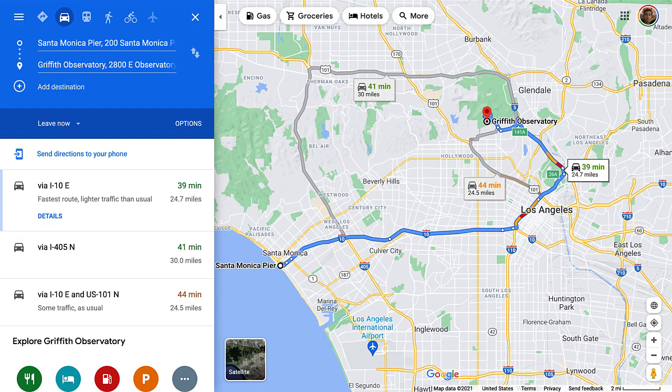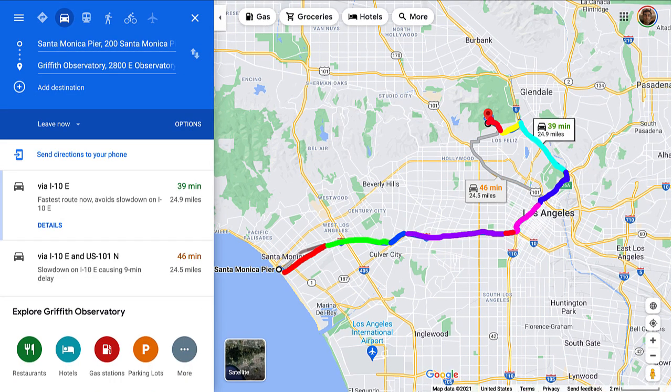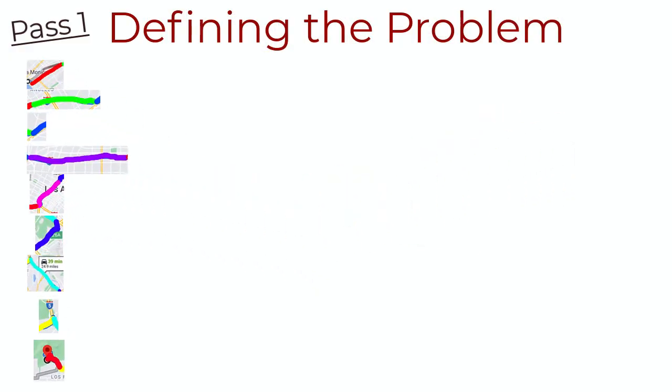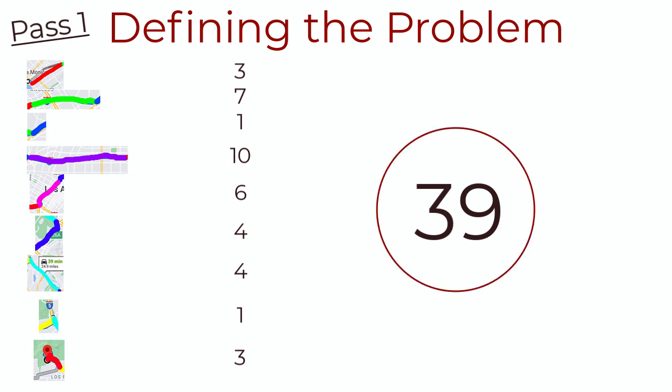Let's start pass one with defining our problem. We want to determine the time taken to go from Santa Monica to Griffith Park. There are many points of uncertainty that make it difficult to predict directly. So we can break this route down into road segments. Now we need to find the time to traverse each road segment, then sum them up to get the ETA. Simple enough.